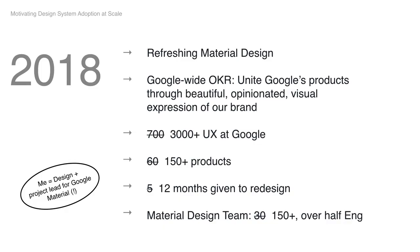We developed a Google-specific version of material theming with our own set of guidelines, components, and tooling, and made that available to the company in 2018. Here's how our context changed from 2014 to 2018: we again secured a company-wide mandate, but there were now 3,000 UXers to get on board, 150 products. We gave people much longer to redesign, in part because we were also supplying the engineering components. Our team has quintupled in size, and we also took on the Google Fonts team.